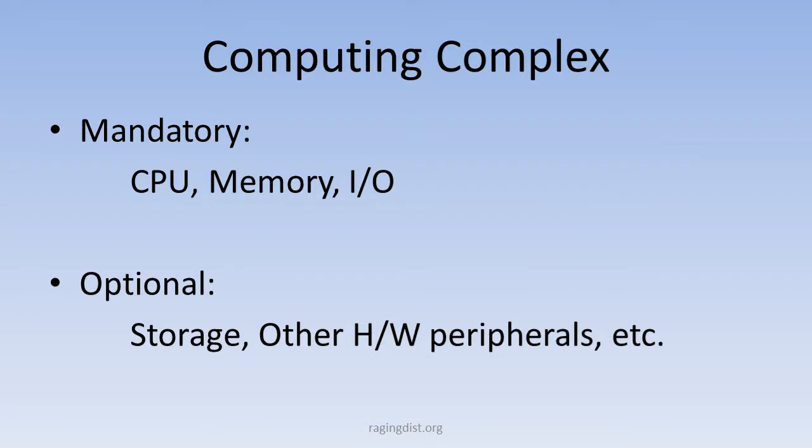A computing complex encompasses a lot of things. You have to have a CPU, memory, and I/O. That CPU can be many things — a DSP, a microprocessor, a system-on-a-chip — but it will work with some memory. There's RAM, random access memory, and also flash memory, a non-volatile type, so you mix volatile and non-volatile. And it'll have some sort of I/O going into the computing complex, because what good is a computing complex if you can't access it?